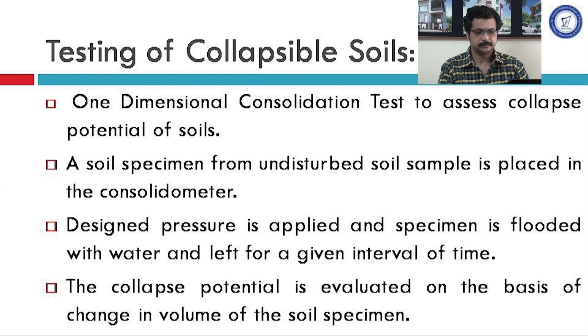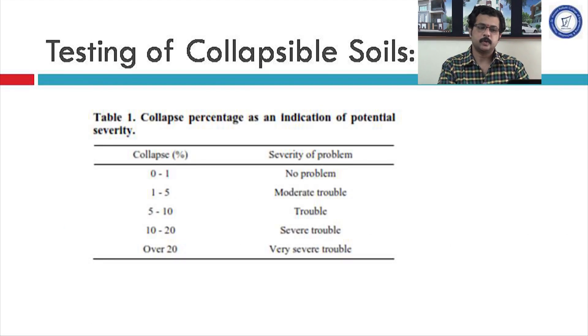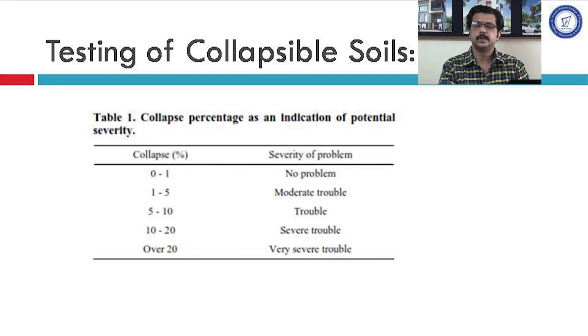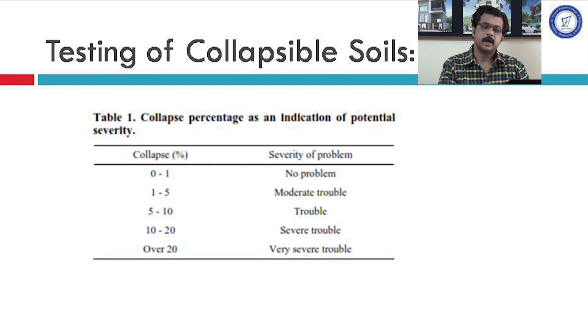Based on numerous tests, researchers have developed a table relating collapse percentage to severity. When collapse percentage is 0–1%, there is no severe problem. From 1–5% it is a moderate level of trouble; 5–10% is a higher level of trouble; 10–20% is severe trouble; and over 20% is very severe trouble. Once the collapse potential percentage is determined, we can decide what kind of treatment to give the soil so it will carry the required load without collapse and maintain the required shear strength.